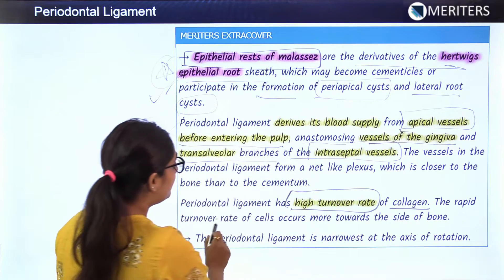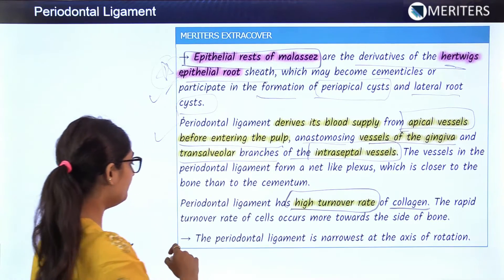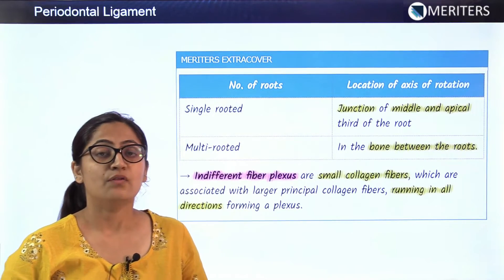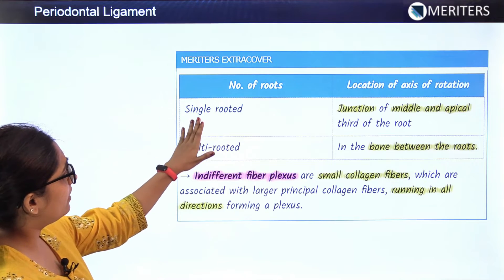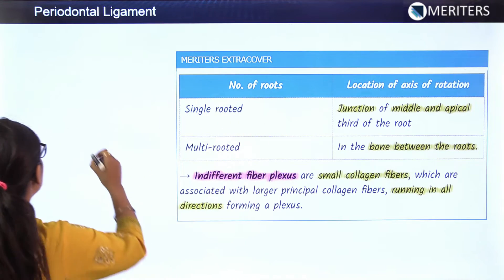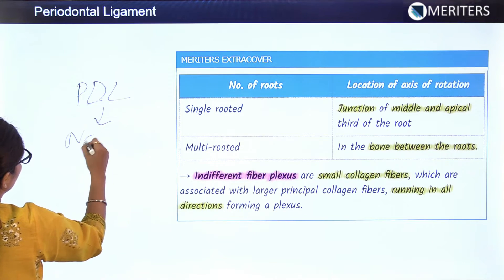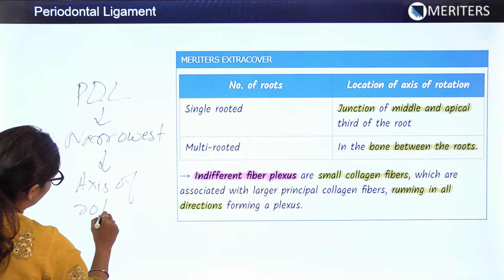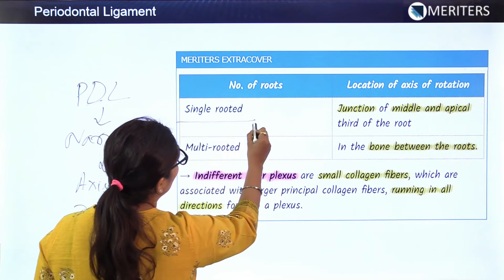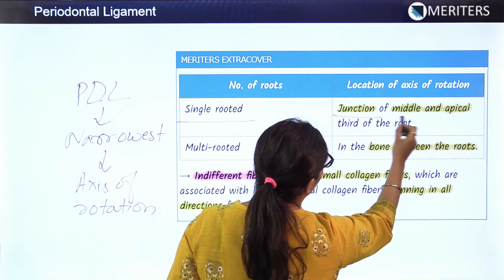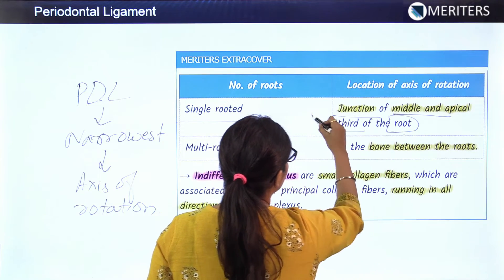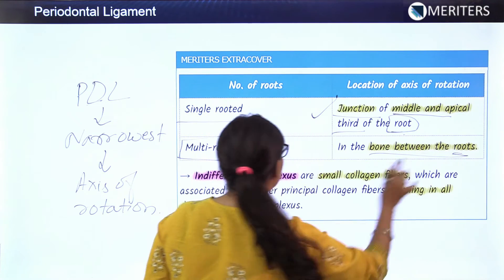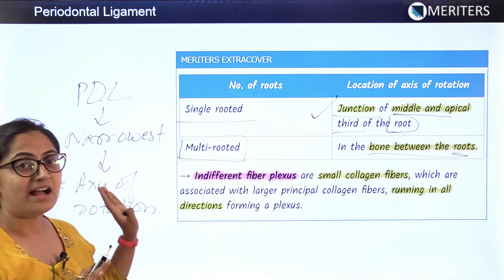The periodontal ligament has a high turnover rate of collagen, and the rapid turnover of cells occurs more towards the side of bone. The periodontal ligament is narrowest at the axis of rotation. For a single-rooted tooth, the axis of rotation is at the junction between the middle and apical third of the root. For a multi-rooted tooth, the axis of rotation is in the interradicular region.